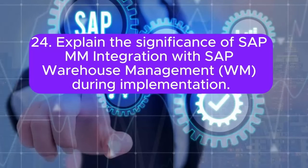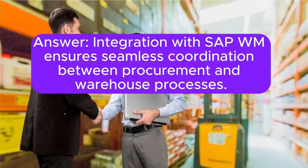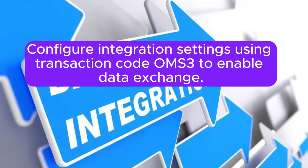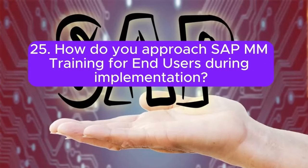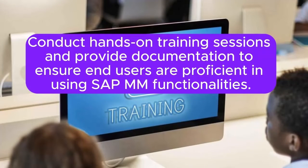Question 24: Explain the significance of SAP MM integration with SAP Warehouse Management (WM) during implementation. Answer: Integration with SAP WM ensures seamless coordination between procurement and warehouse processes. Configure integration settings using transaction code OMSC3 to enable data exchange. Question 25: How do you approach SAP MM training for end users during implementation? Answer: Develop training materials based on configured processes. Conduct hands-on training sessions and provide documentation to ensure end users are proficient in using SAP MM functionalities.